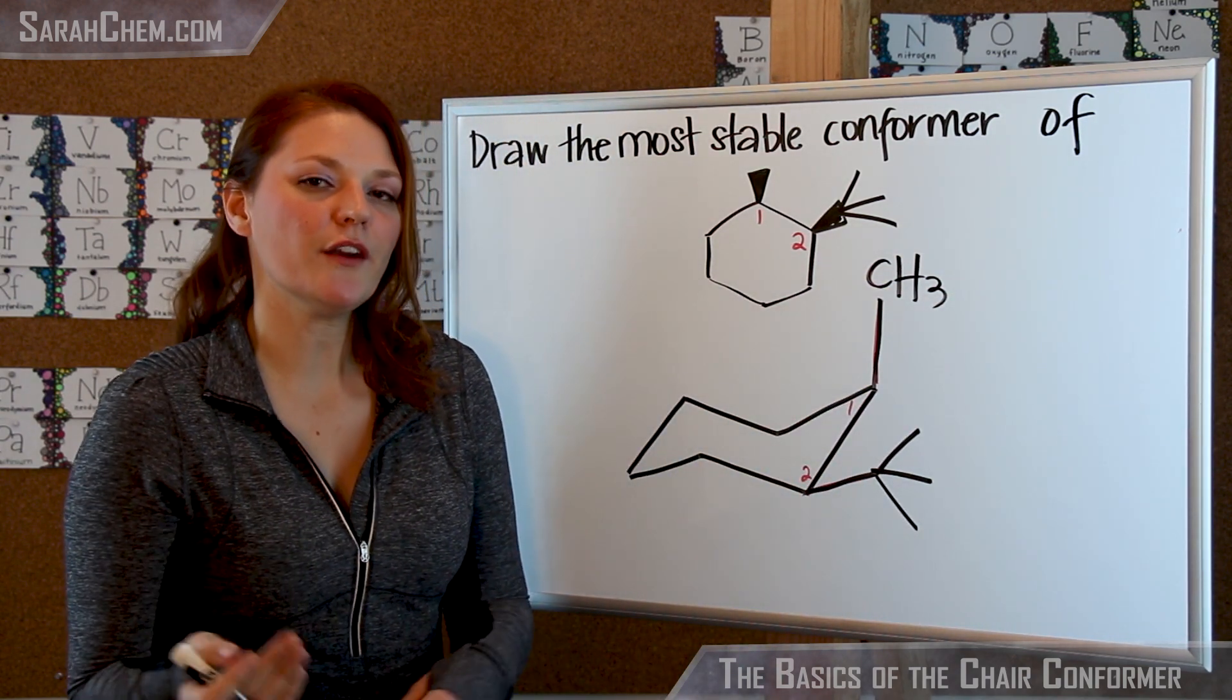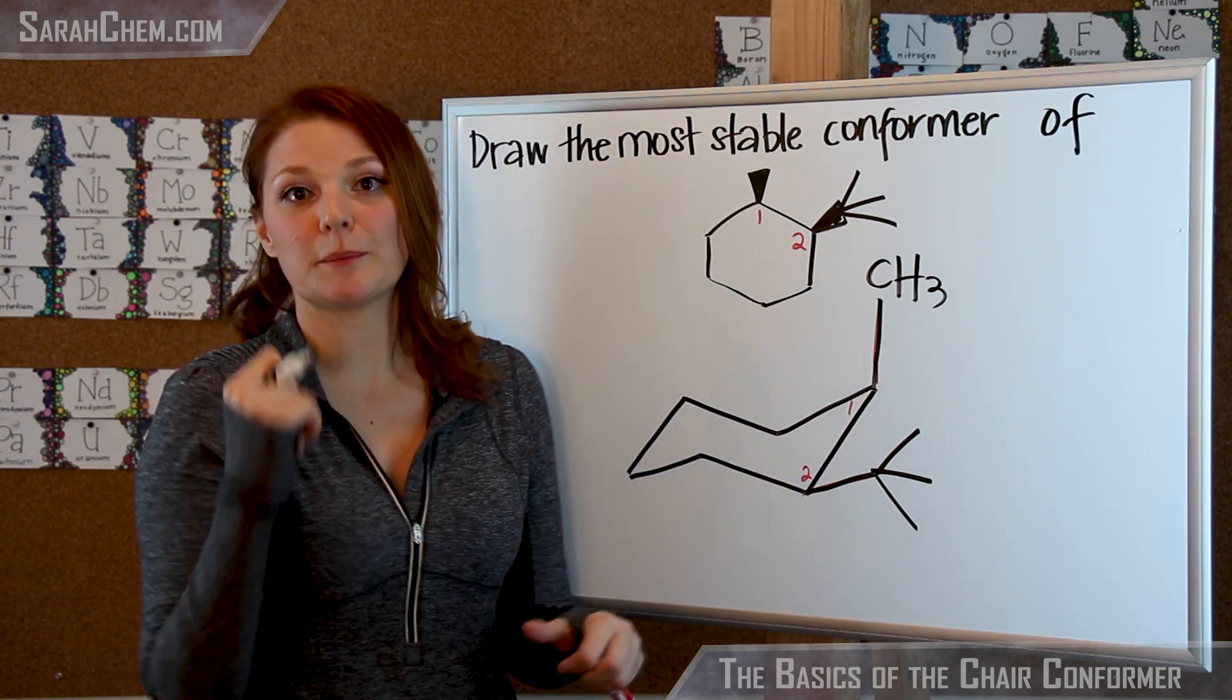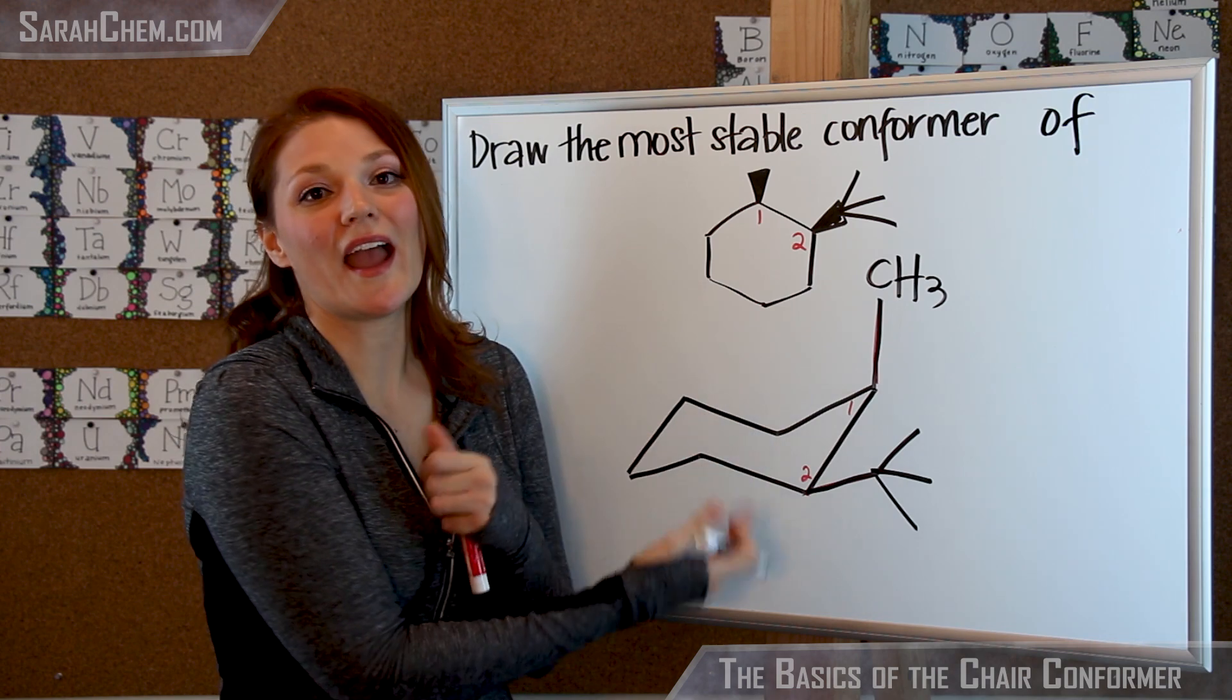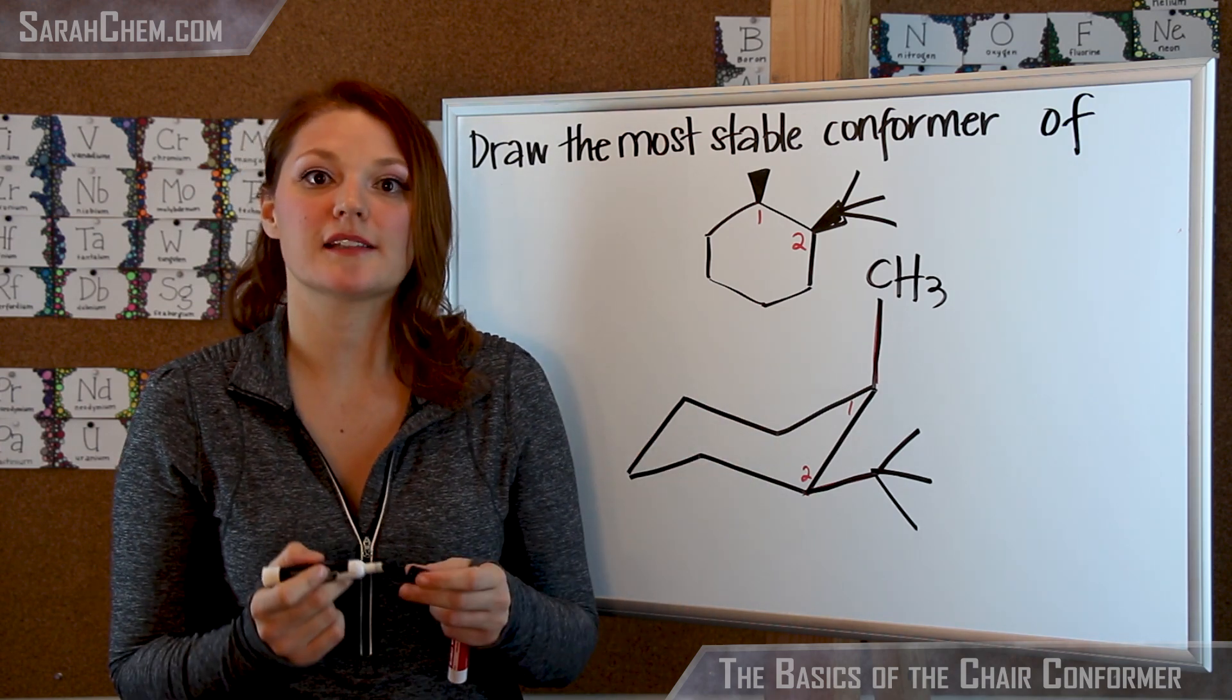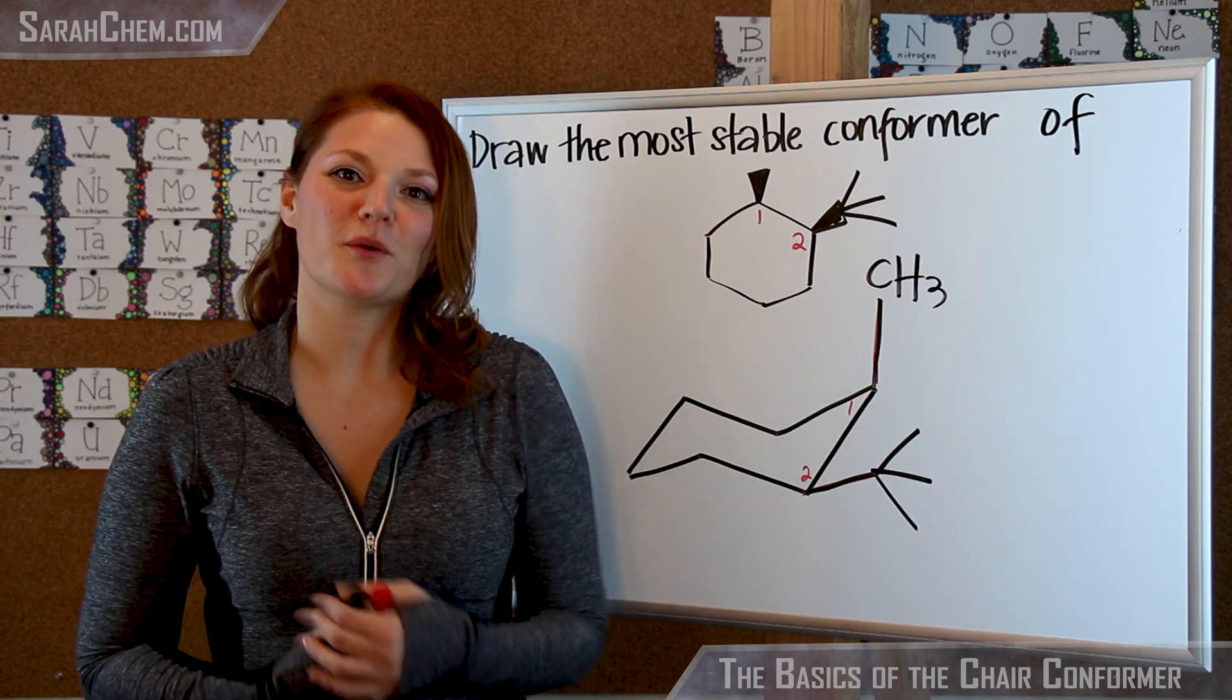So remember, this isn't the only chair, but it is the most stable chair that we can form. And in this case, unlike the previous example, we had limitations, which is why I had to put a structure where something was axially placed. So those are some of the big points you want to keep in mind when you're doing one of these kinds of problems.